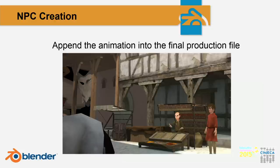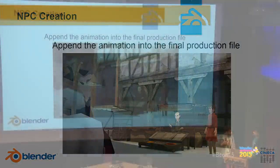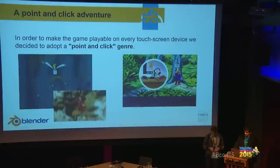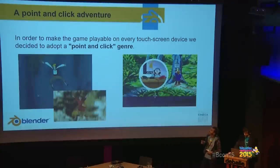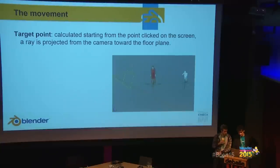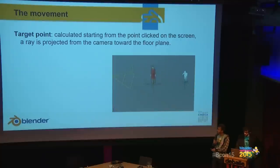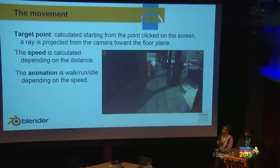For the more technical part — JavaScript and such — I leave the floor to Luigi. So in order to make the game playable on every touchscreen device, we decided to adopt a point-and-click genre, inspired by LucasArts Monkey Island. When you click on the 2D screen, the game calculates a target point for the character to move to. The target point is calculated from the point clicked on screen, with a ray projected from the camera toward the floor plane. The speed is calculated depending on the distance, and the animation can be walk, run, or idle depending on the speed.